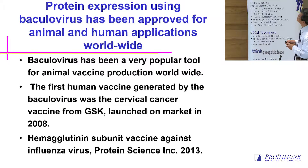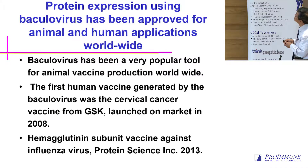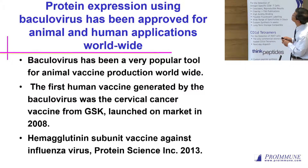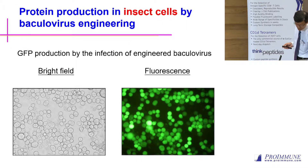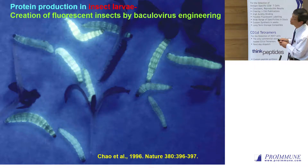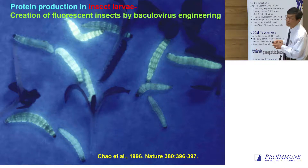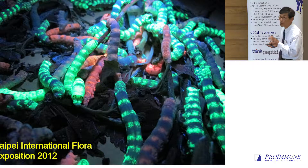Baculovirus has been a very popular tool for animal vaccine production worldwide. The first human vaccine generated by baculovirus was the cervical cancer vaccine from GSK, and also another one — a hemagglutinin subunit vaccine against influenza virus by another company. We can use baculovirus for producing protein in insect cells, and also in insect larvae. This is insect larva infected by baculovirus over several days — the insect leads up and becomes a fluorescent insect, which is much larger.